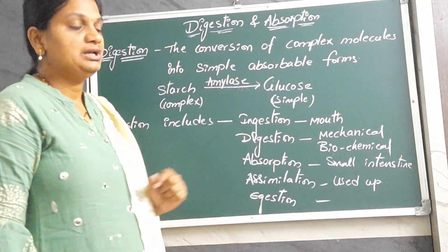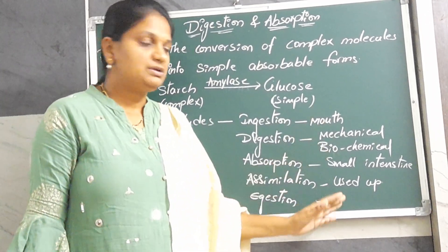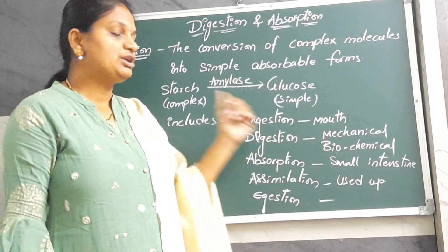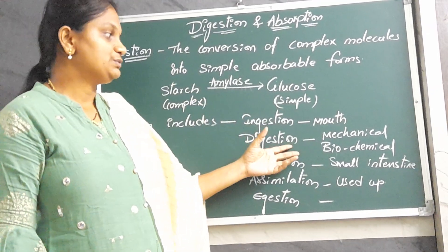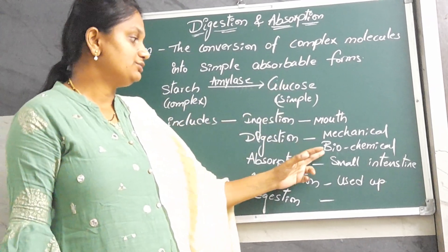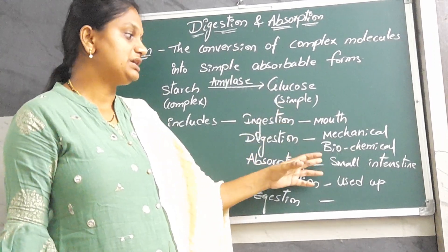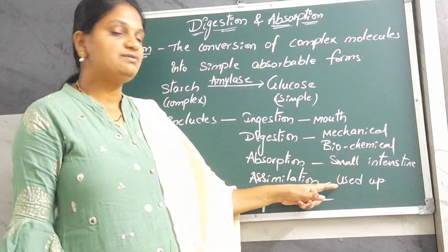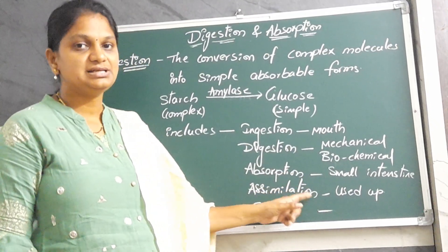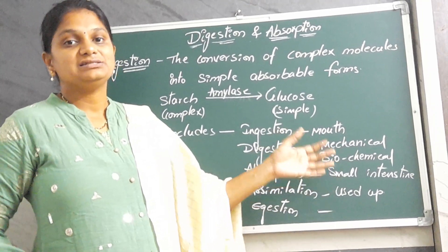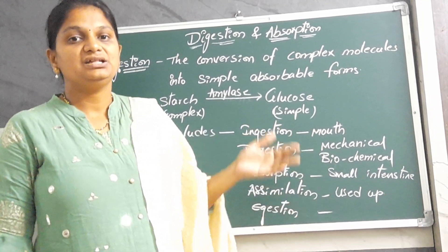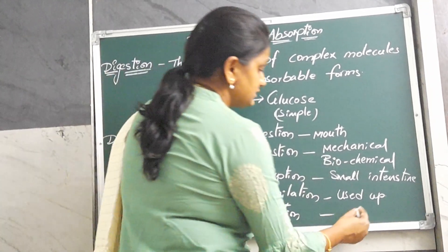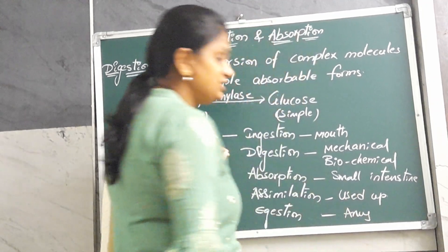Next comes egestion. Through the mouth we ingest food, and through mechanical and biochemical digestion the complex food is converted into simple food. After digestion, the nutrients present are absorbed from the small intestine into the blood, and the cells utilize them — that process we call assimilation. The undigested food, the unused food, is excreted or eliminated out through the anus. That process is called egestion.